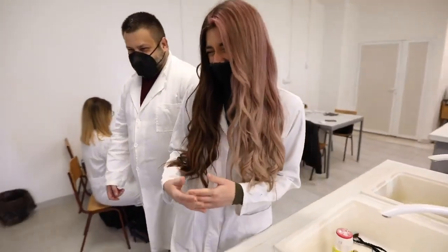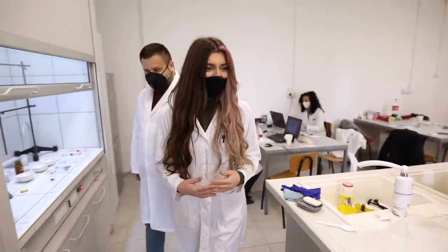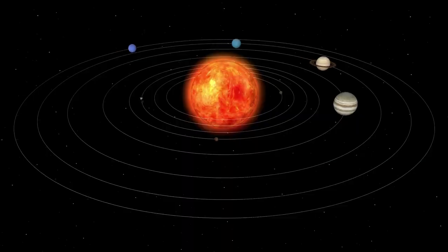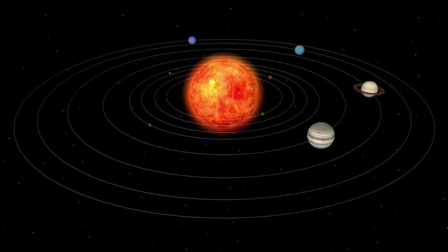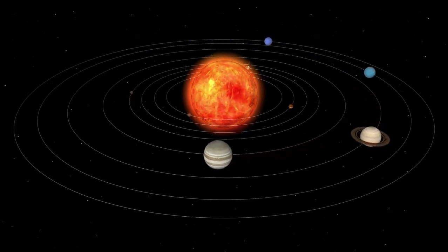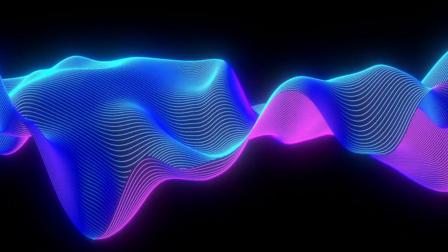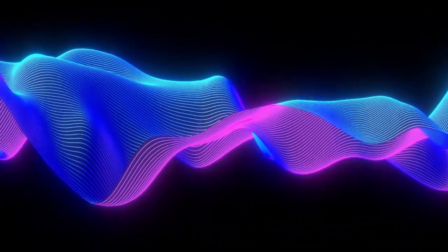These measurements have revealed a complex and dynamic interstellar medium, challenging previous assumptions about the void between solar systems. Voyager 2's sensors have shown that even in the most remote parts of the galaxy, space is alive with subtle activity.